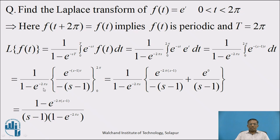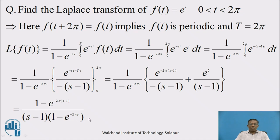Which is equal to 1 upon (1 minus e raised to minus 2πs) into integration with limit 0 to 2π of e raised to minus (s minus 1)t dt. Integration of e raised to minus (s minus 1)t is e raised to minus (s minus 1)t upon minus (s minus 1), with limit 0 to 2π. Substituting limits: when t = 2π, we get e raised to minus 2π(s minus 1) upon minus (s minus 1); when t = 0, we get e raised to 0 upon (s minus 1). After simplifying using e raised to 0 = 1, the numerator is 1 minus e raised to minus 2π(s minus 1), upon (s minus 1) into (1 minus e raised to minus 2πs). This is the required answer.